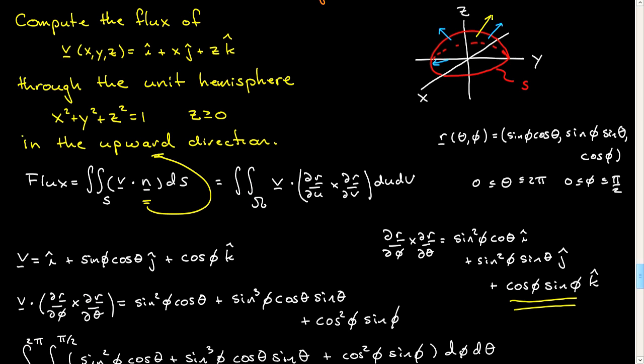This normal vector at any particular point, let me draw it over here, will point, will point upwards, in all cases, and so, so that was the right choice. We didn't have to put in a minus sign.